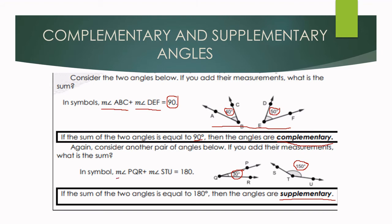In symbol, that is: the measure of angle PQR plus the measure of angle STU is equal to 180 degrees. Take note — if the sum of two angles is equal to 180 degrees, then the angles are supplementary angles.